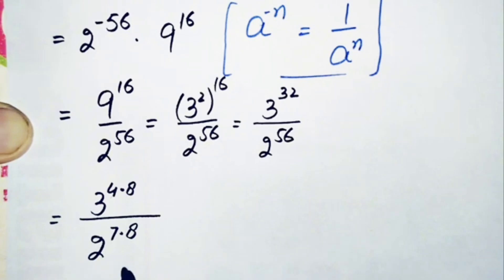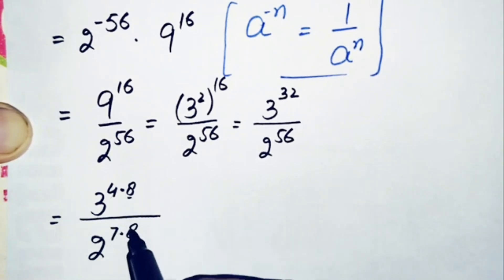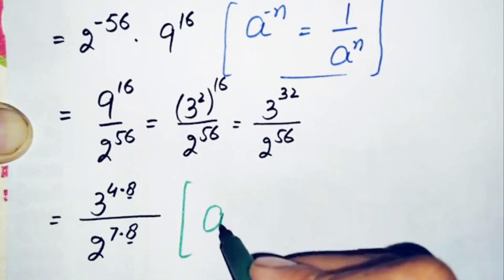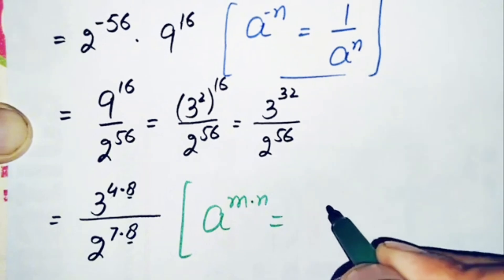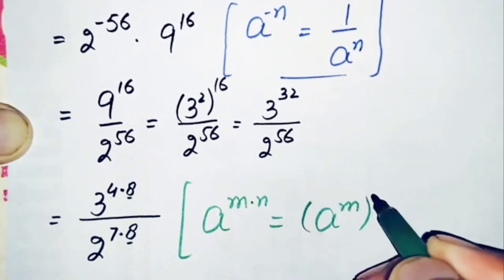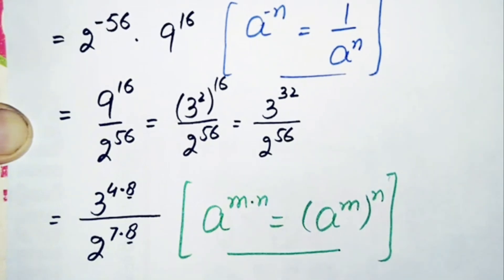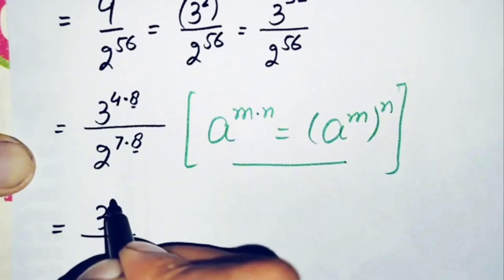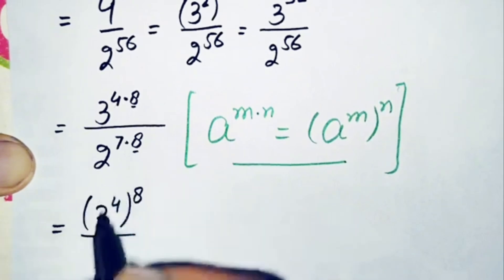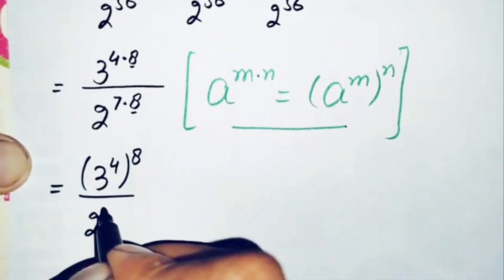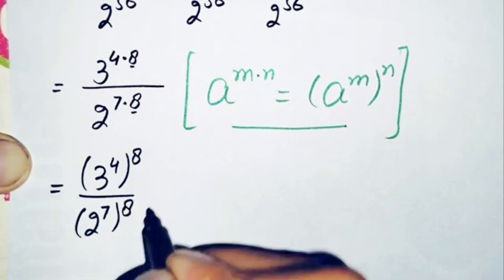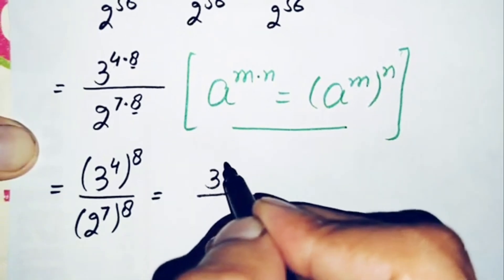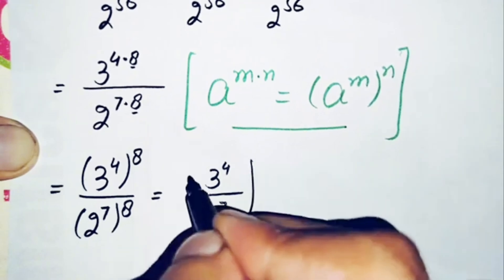Using the exponential property that r raised to power m times n can be written as (r raised to power m) raised to power n, we apply this in both numerator and denominator. The numerator becomes 3 raised to power 4, all raised to power 8, and the denominator becomes 2 raised to power 7, all raised to power 8. Since the power 8 is common in numerator and denominator, we take it out, giving us 3 raised to power 4 divided by 2 raised to power 7, all raised to power 8.